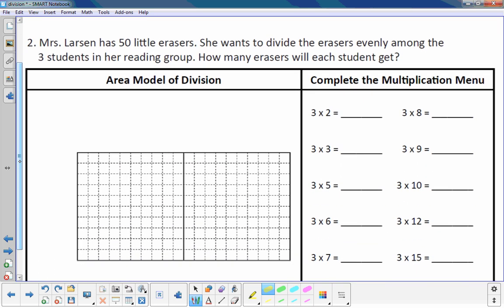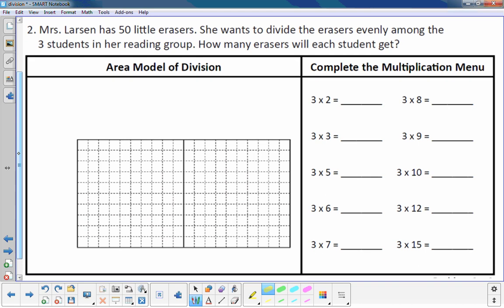Mrs. Larson has 50 little erasers. She wants to divide the erasers evenly among three students in her reading group. How many erasers will each student get? All right. Well, there's three students. So I noticed that Mr. Knowles provided me with a multiplication menu for three. I'm going to solve those basic facts.